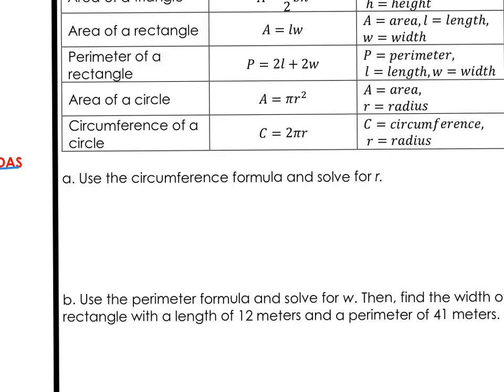Use the circumference formula and solve for R. The definition for circumference of a circle is 2 times pi times R, where R is the length of the radius. If we start by writing that formula out, C equals 2 times pi times R, and we're asked to isolate the R variable, the 2 and the pi are both being multiplied. To move them to the other side, we will simply divide.